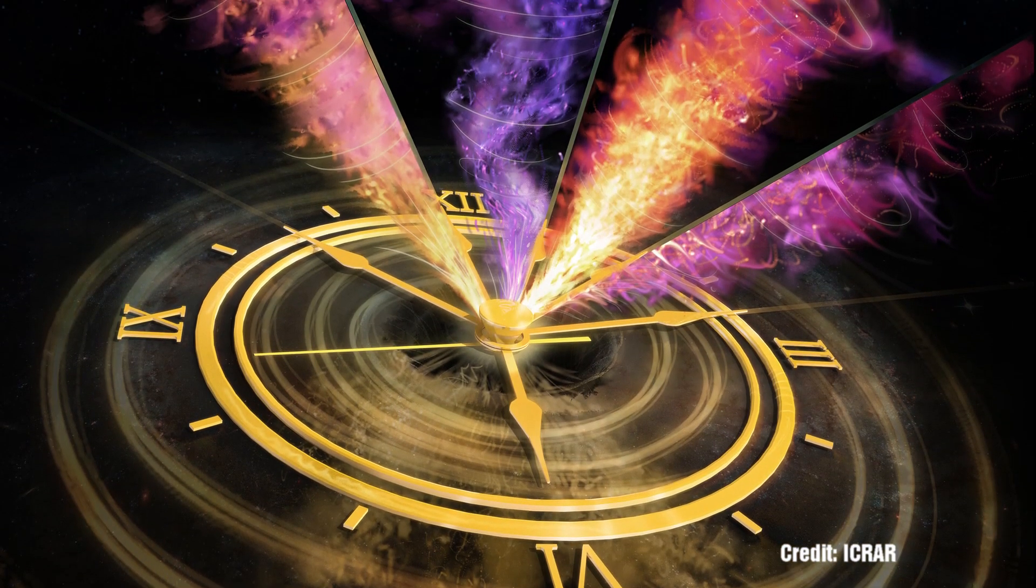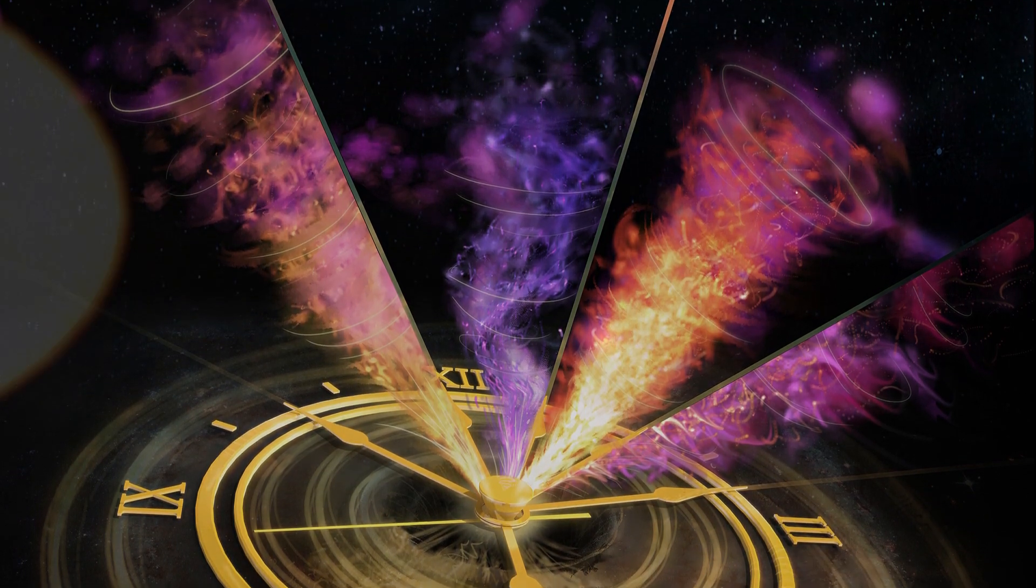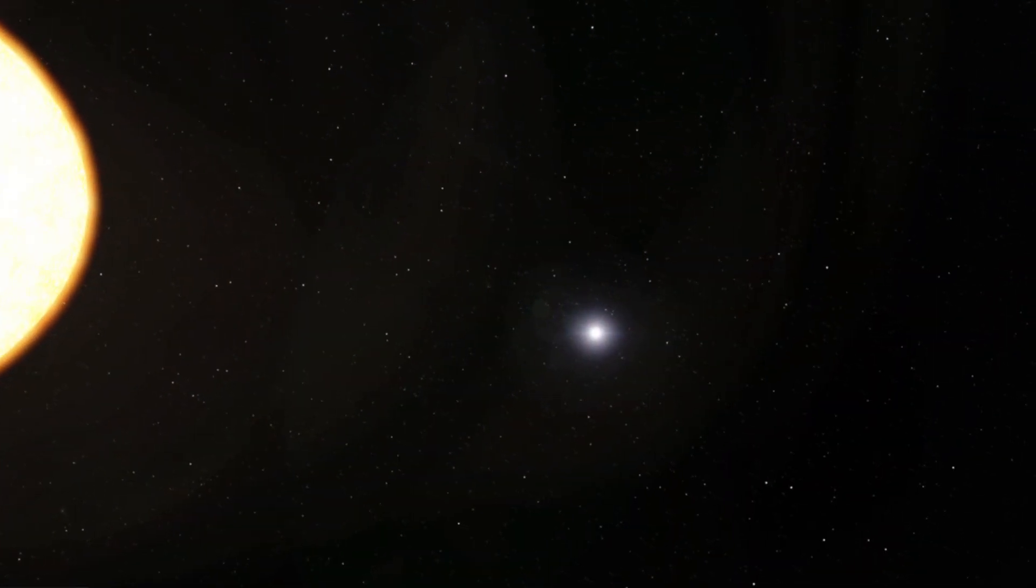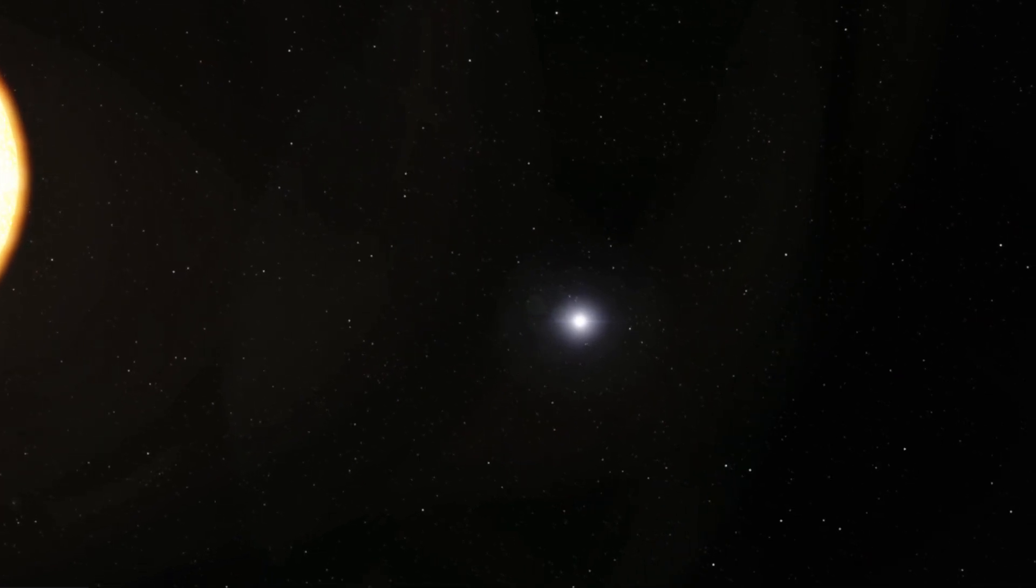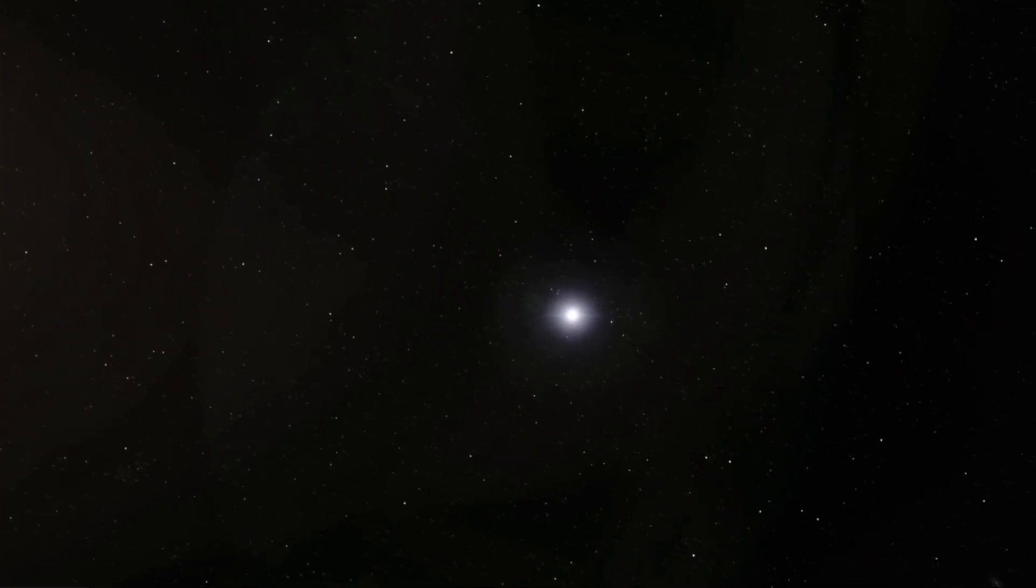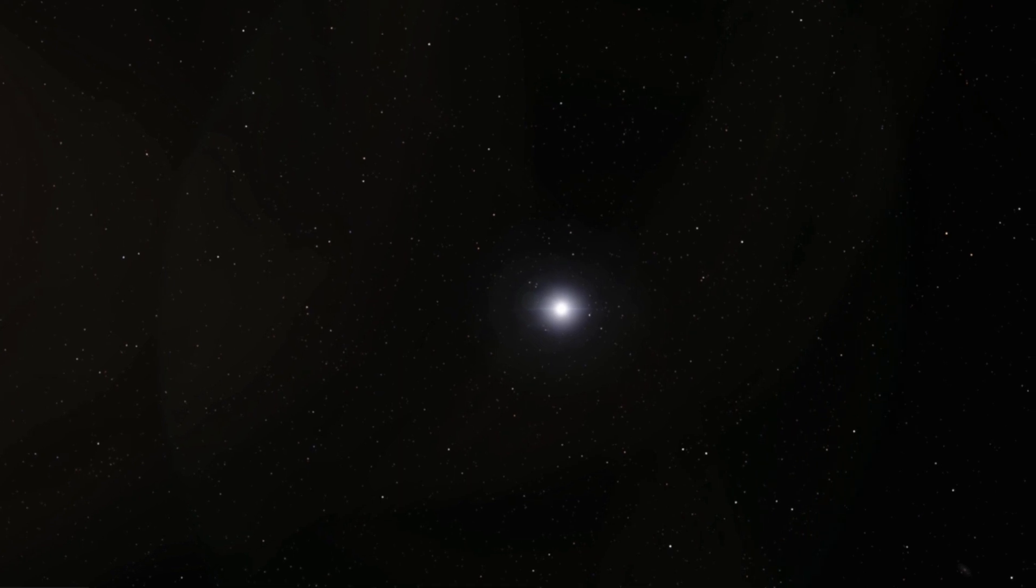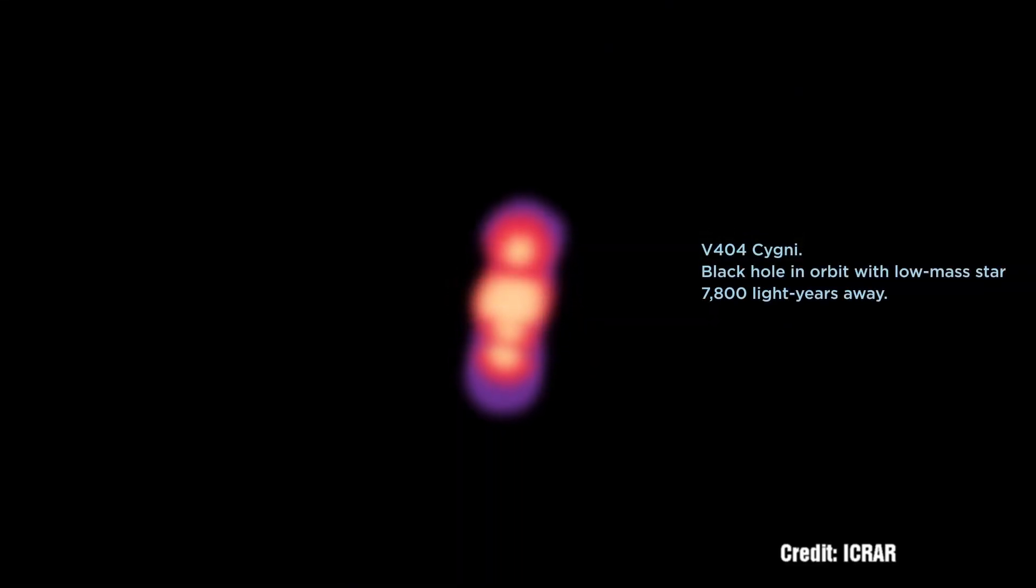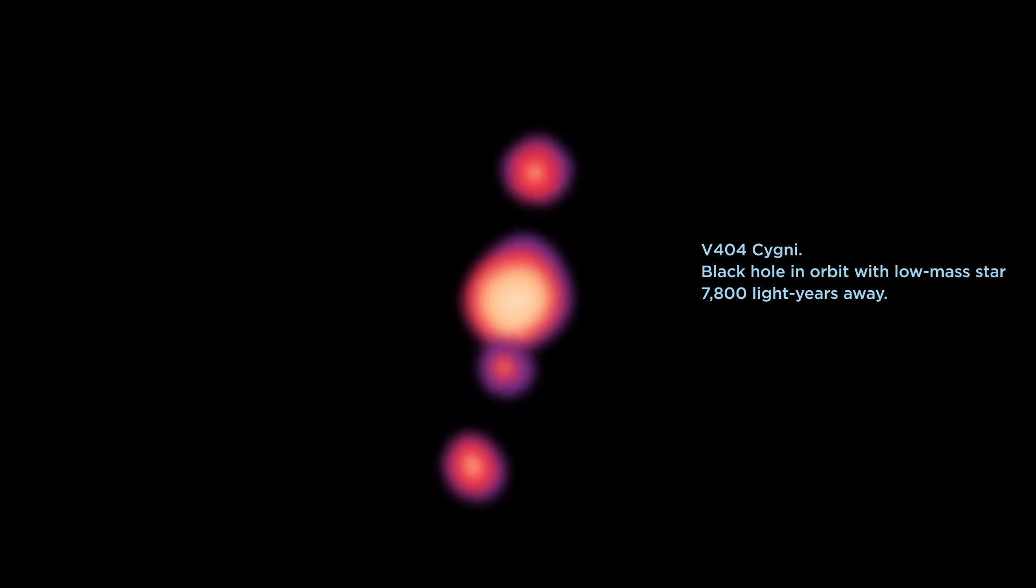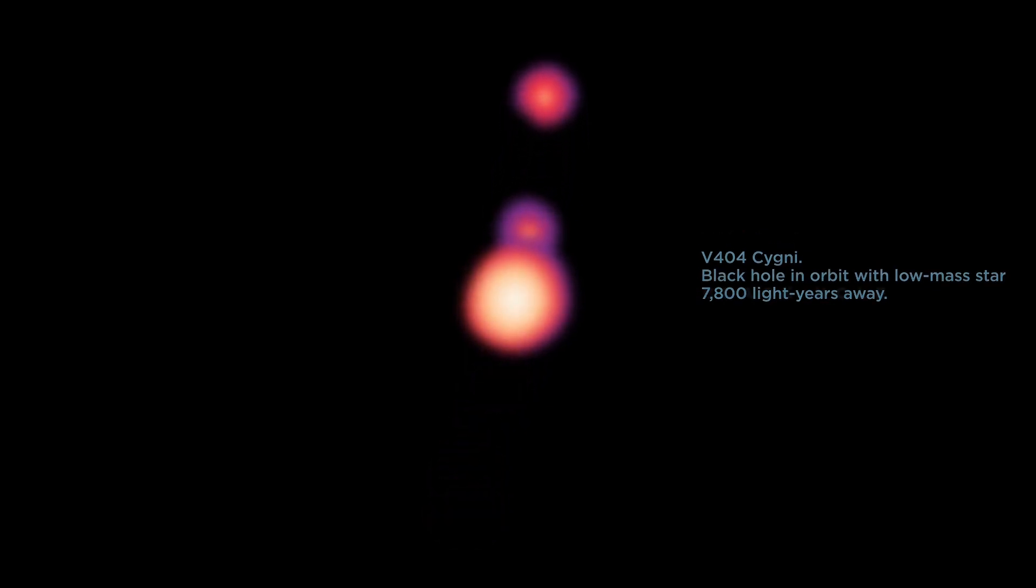The latest piece of research is set to be published in the Journal of Nature. When V404 Cygni experienced another bright outburst in 2015, lasting around two weeks, many telescopes around the world were trained on this event. And when they examined the data, they discovered that the jets coming off the black hole were behaving in a way that no one had expected.